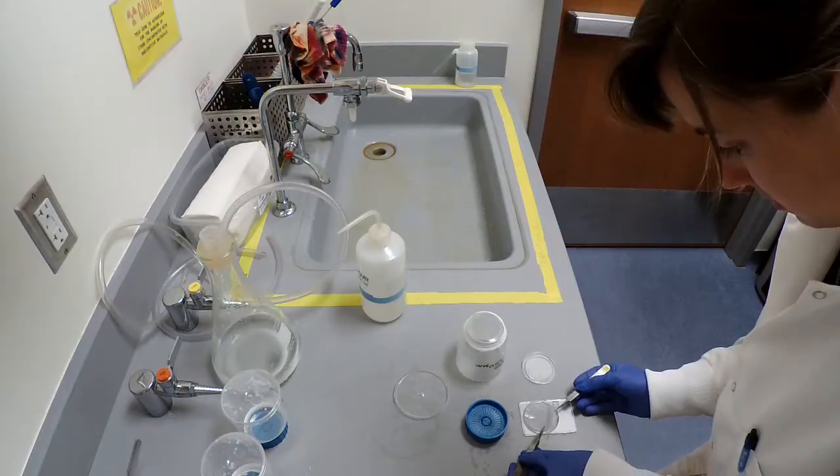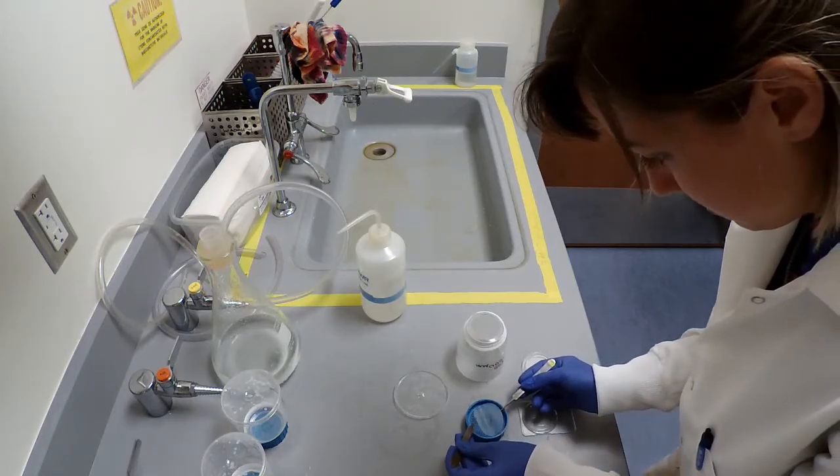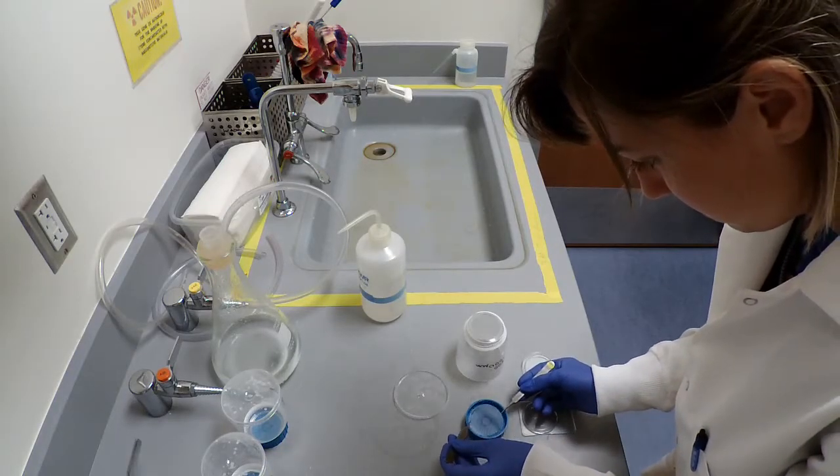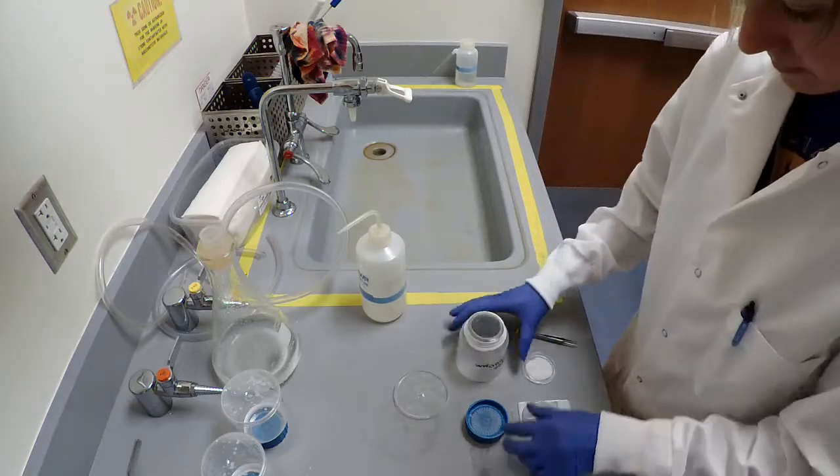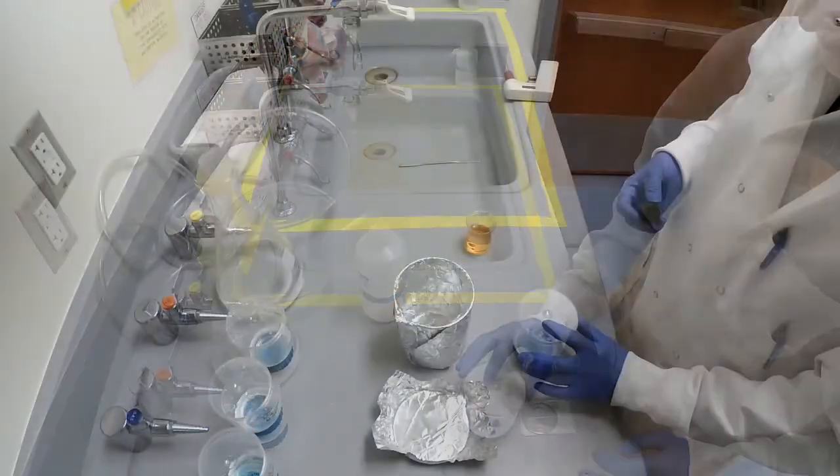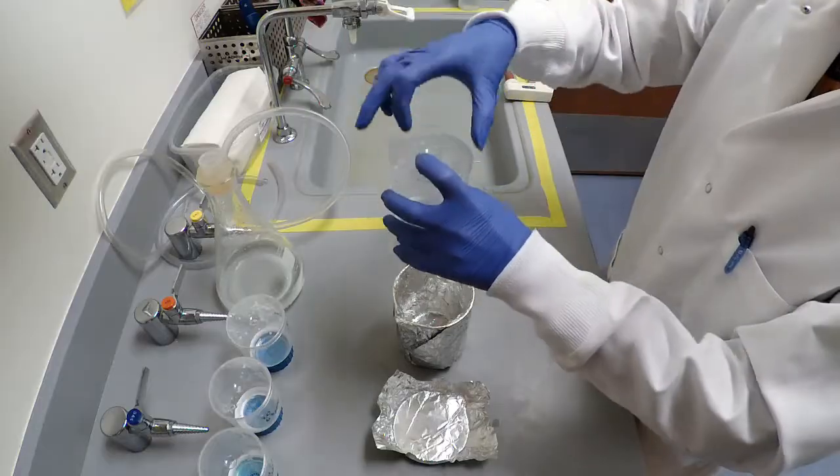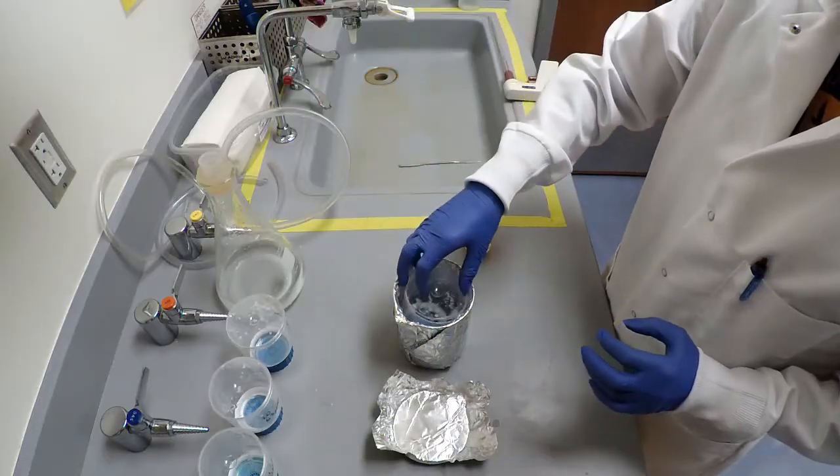For Nile red staining, place the filter back onto the filtering unit. Plug the filtering unit with a rubber stopper and place into a foil lined secondary container.